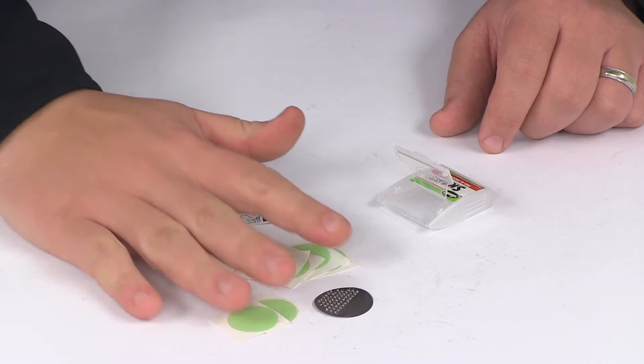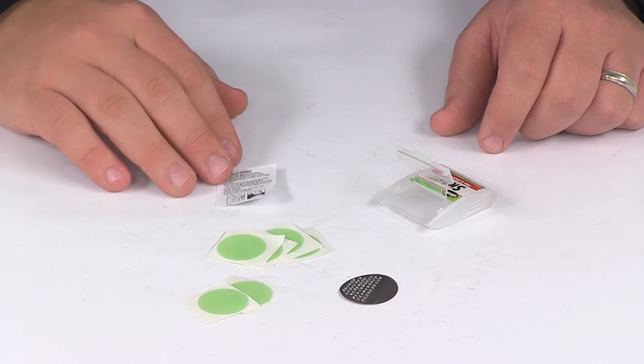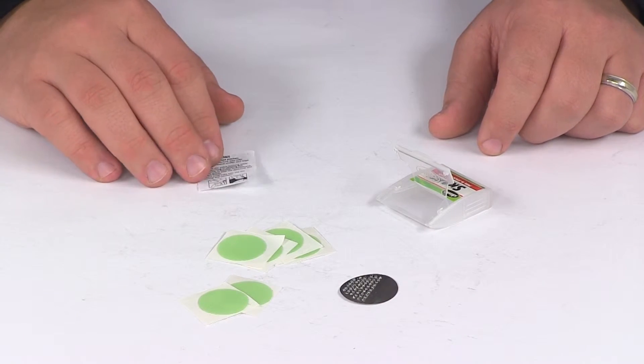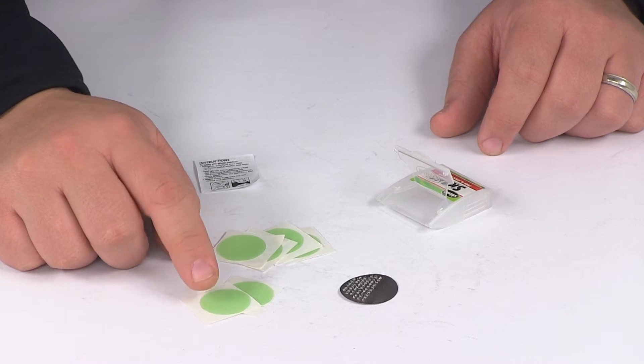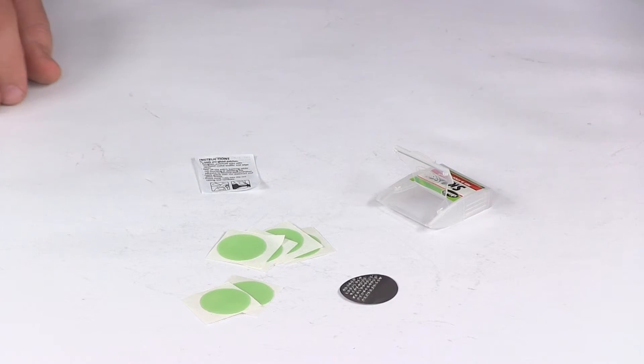So to apply the pre-glued patches, all you need to do is roughen the puncture area with the metal scuffer and then wipe it clean. Apply the patch over the puncture and press firmly, and then simply insert the tube back into the tire casing and re-inflate.